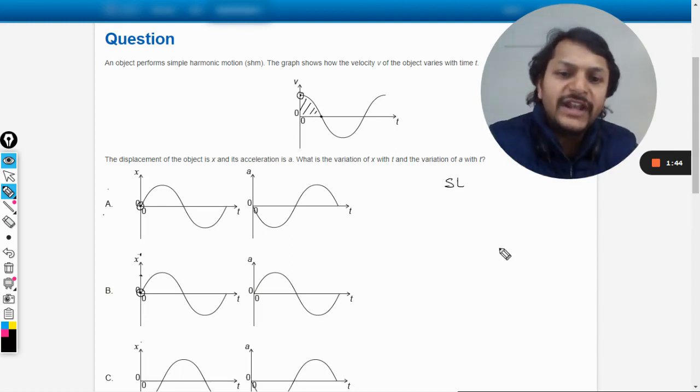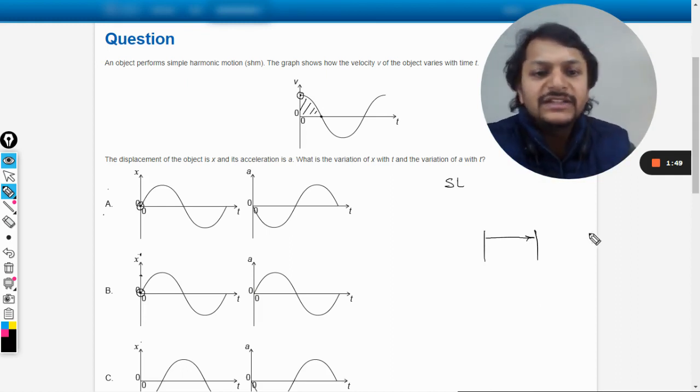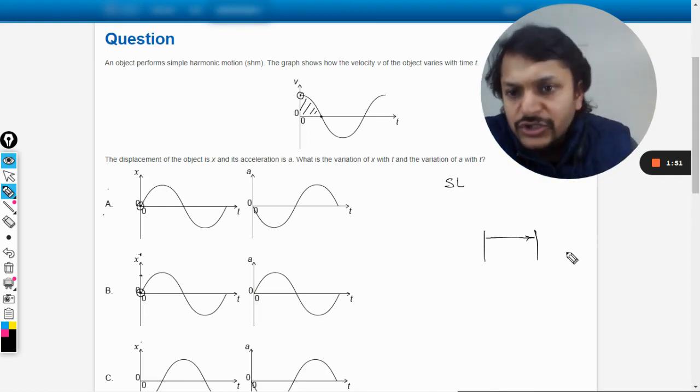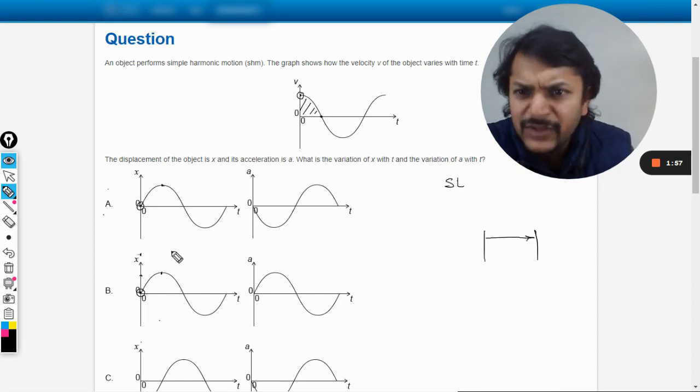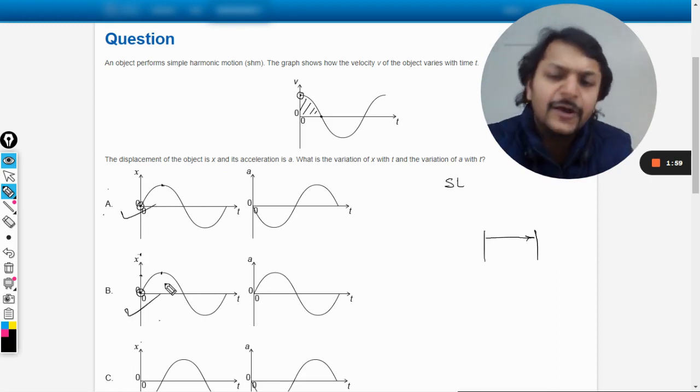Now the velocity was positive, so it means it has moved towards the right. So it moves toward right and then it comes to zero. So it is at the right extreme position. So it should be reflected in our graph. Yes, the displacement is positive in both of these cases. So displacement is fine.